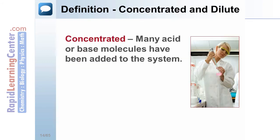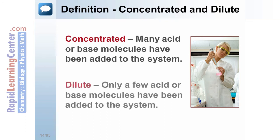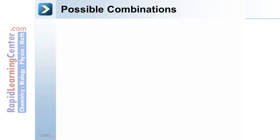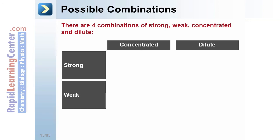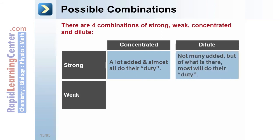Concentrated and dilute refer to how many acid or base molecules are added to the system versus how large the system is. Strong and weak acids can be either concentrated or dilute. Concentrated strong means a lot is added and almost all of them do their acid or base duty. Dilute means not many molecules were added, but most of what was added will perform the acid or base duty.